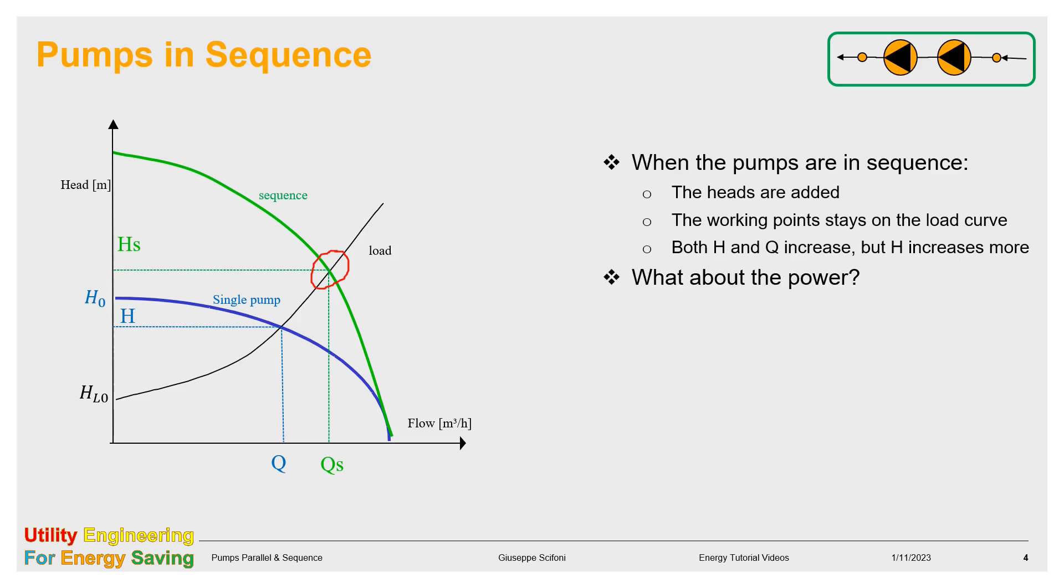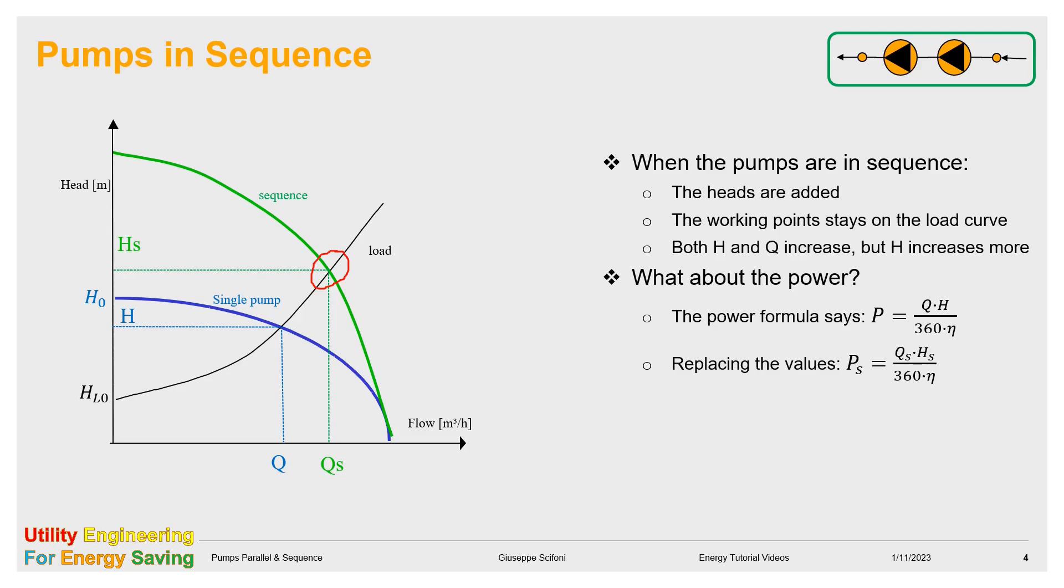The power of the new pumping system is given by the same formula used for the single pump, by replacing the head HS and the flow QS found for the sequence operation, as seen in the previous slide. Normally, the power of the system is less than the sum of the power of the single pumps. This is not a rule, however.